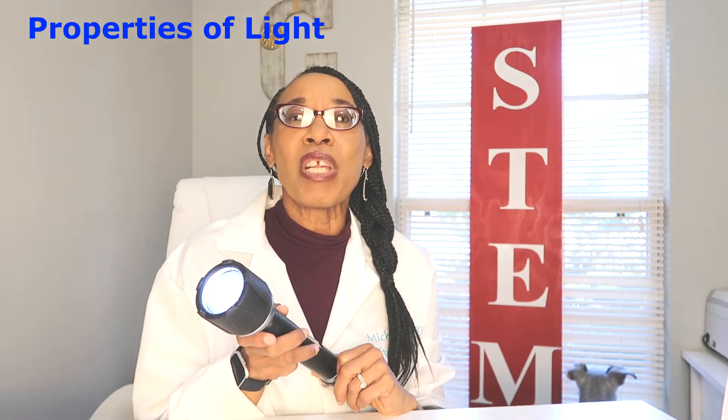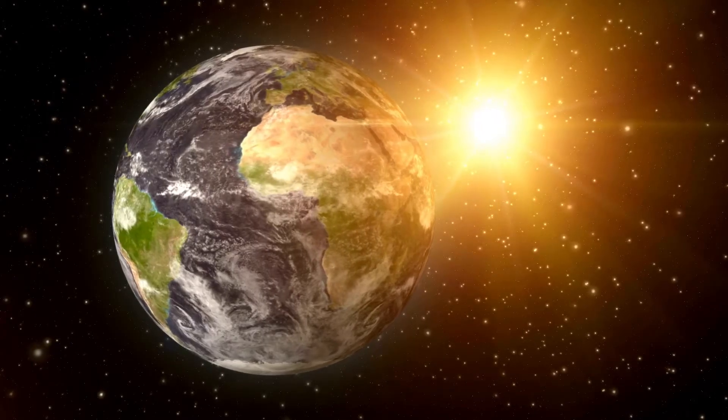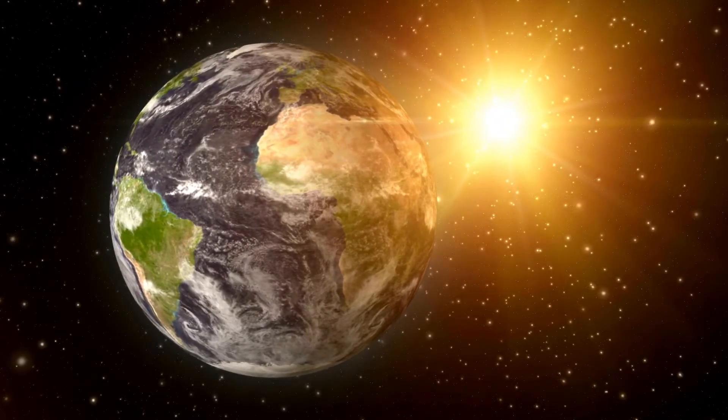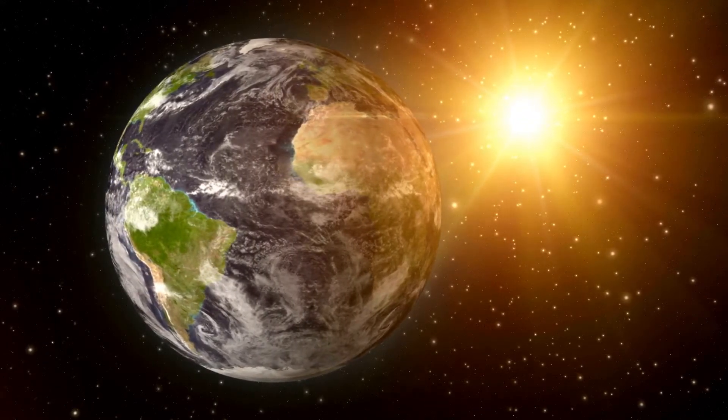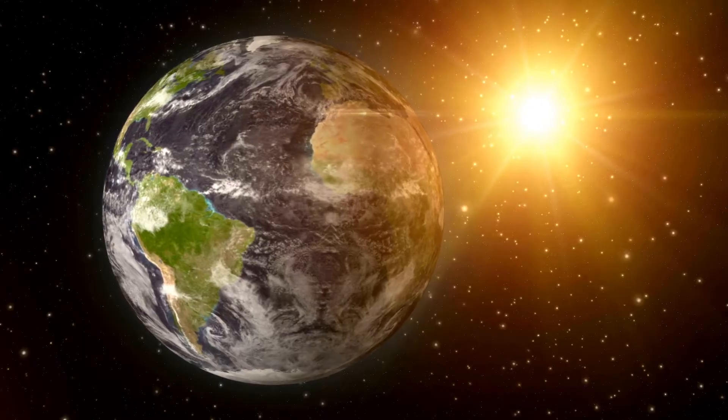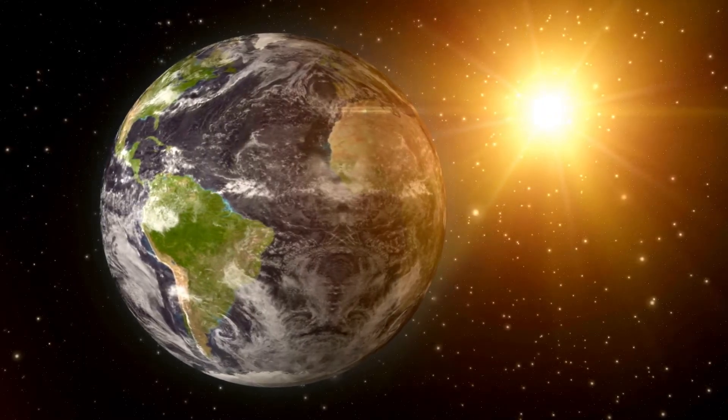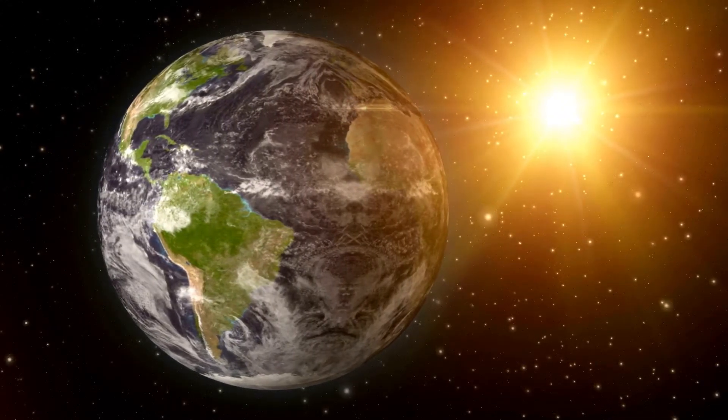Light is an important resource that we use on a daily basis. Our largest natural resource of light is the sun. The sun gives us vitamin D, it enables photosynthesis where plants can grow, and it also keeps our earth warm. Without the sunlight, our earth would be a frozen ball and we would not be able to live here.